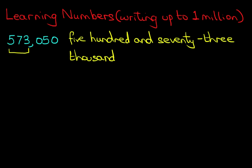There we have it. 573,000. Now, how about the rest of it? We write down 50. Notice we're not going to add the comma in the words. We're just going to write down and 50.